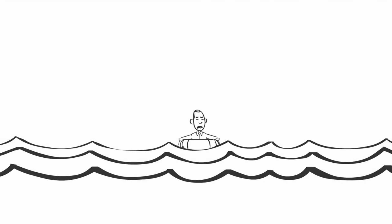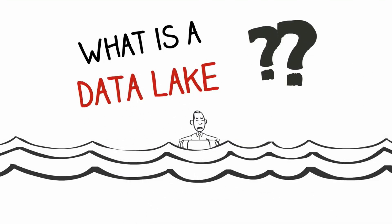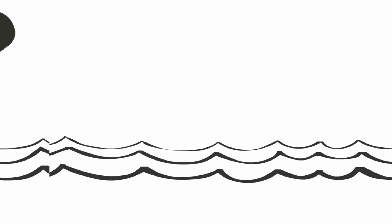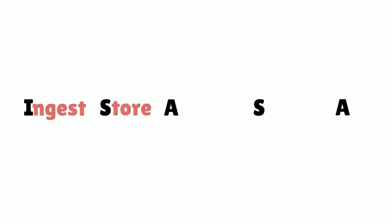We're going to be taking a look at a term that is becoming more prevalent in IT today: data lake. What is a data lake and what does it mean to you? EMC defines a data lake by five major principles, easily remembered with the acronym ISASA — which stands for Ingest, Store, Analyze, Surface, and Act. Without the ability to support these functions, there is no data lake strategy. Let's break down each of these principles to understand them better.